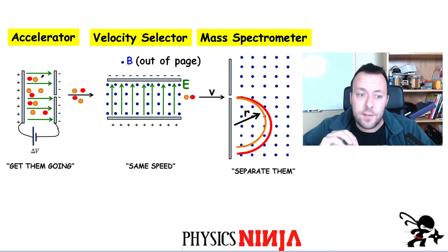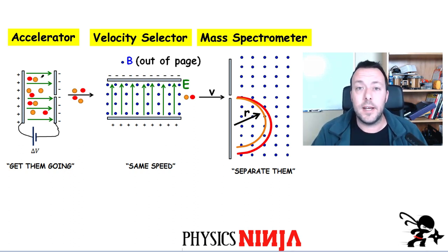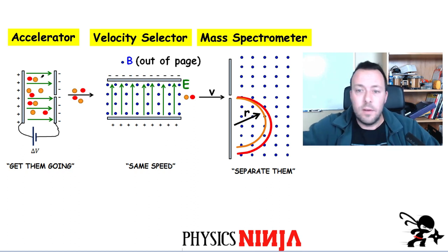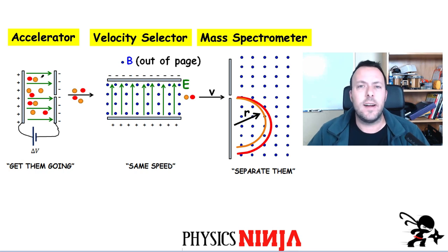The last part is actually the mass spectrometer part. Here we use a magnetic field, and charges in a magnetic field will go around in a circular path. This section separates out the different isotopes so you can see the relative concentration of each. We're going to look at the physics of each section using a nickel atom that we ionize and put through this mass spectrometer — three different stages.